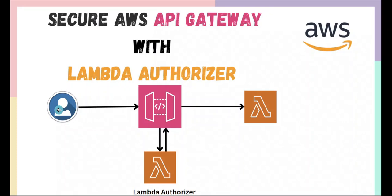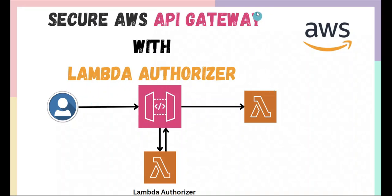If authentication is not successful, the request will not be forwarded to Lambda — it will return a response saying that the user does not have access to this API. That's what we're going to do in this tutorial, so let's get started.